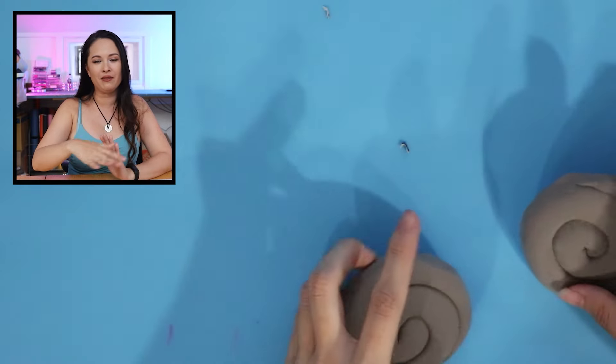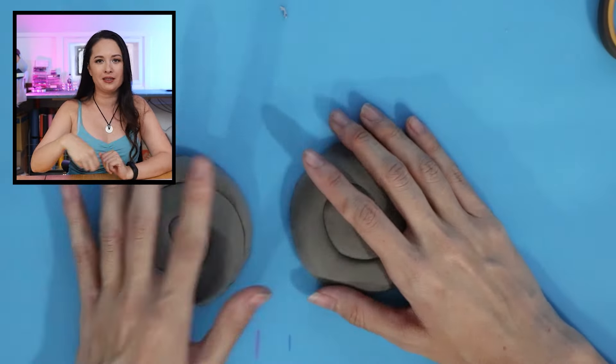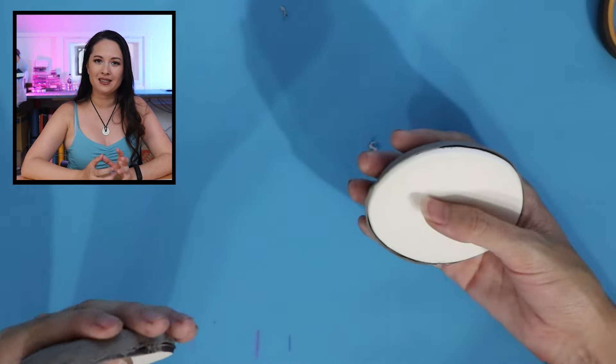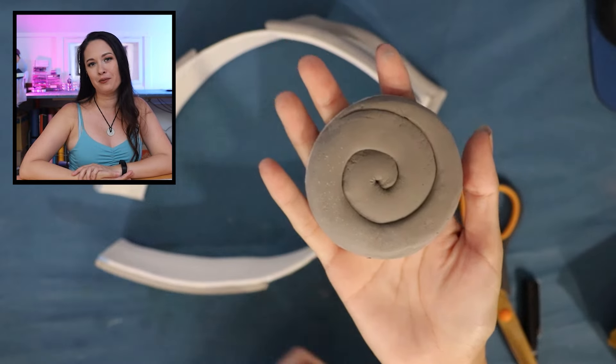The foam clay doesn't like to stick to EVA foam that much, but I just add a little bit of barge glue to the EVA foam and then stick the foam clay on top. And then I sanded all the edges of this so that the foam clay looks seamless with the EVA foam base.